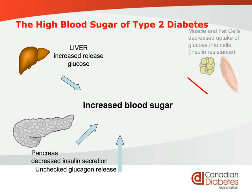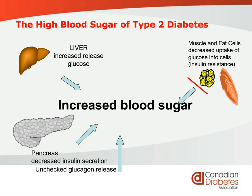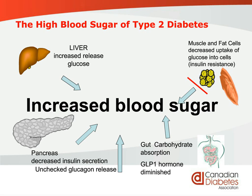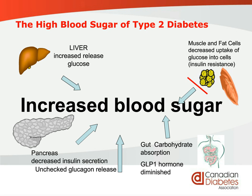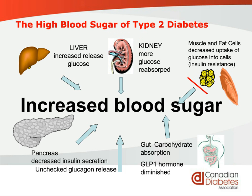Insulin resistance means that insulin can't get a hold of the glucose and take it into your cells for use. When you eat more and get further into diabetes, you can also lose the ability to tell when you're full and often eat more simple carbohydrates. When you eat, your intestines release a hormone called GLP-1, which helps regulate blood sugar in many ways, but the amount of that hormone is diminished in people with type 2 diabetes. More recently, we've come to understand that the kidney also plays a very important role in increasing your blood sugar.